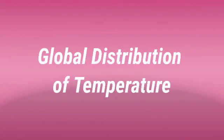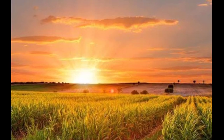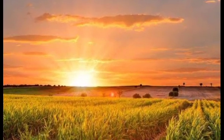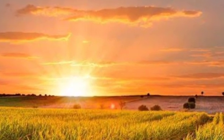Let us study the global distribution of temperature. Observe the map. The smooth curved lines represent the temperature recorded at different places throughout the earth's surface. During the summer, high temperature prevails over the land compared to the sea, and during winter, low temperature prevails over land.